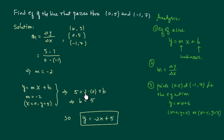y is 5, m is -2, and x equal to 0. We have b equal to 5. So the complete equation for this line we're looking for is y equal to -2x plus 5.